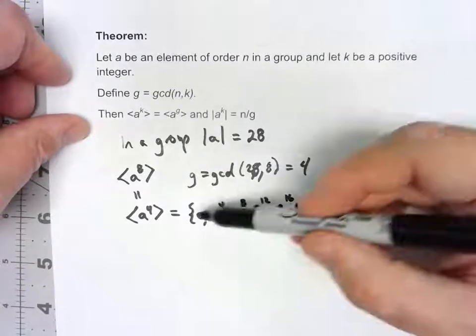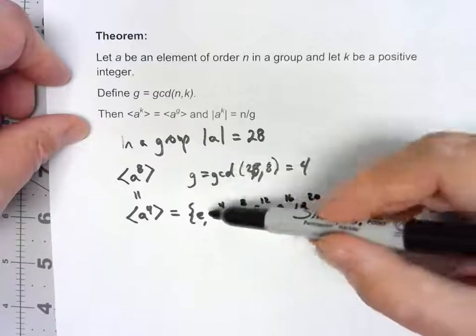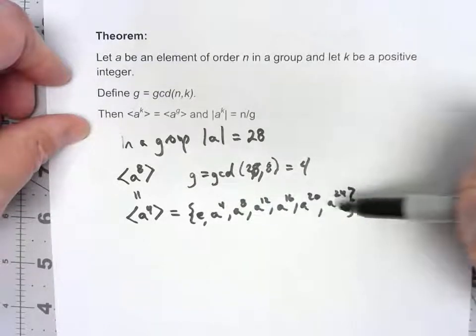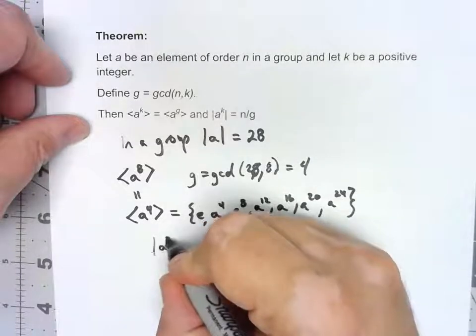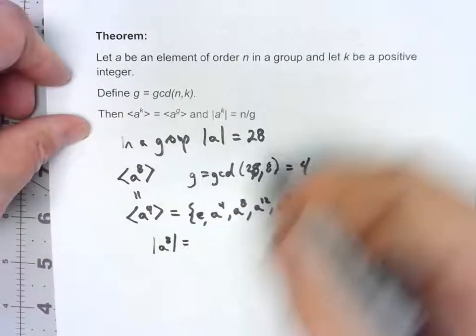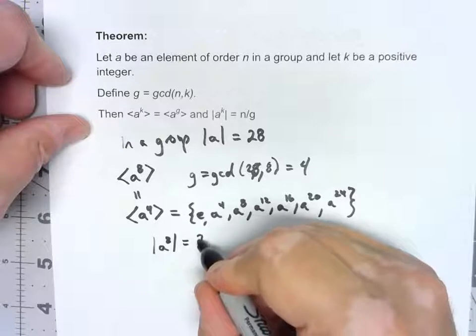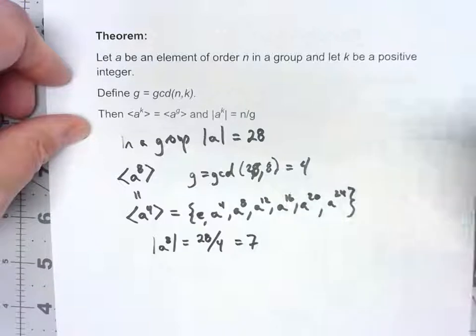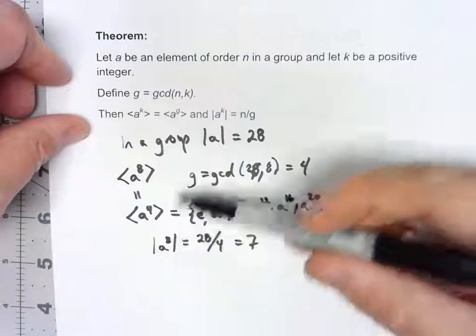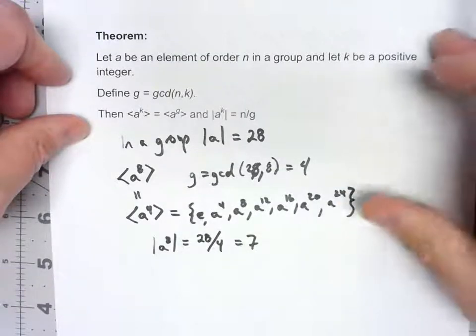Further, notice how many elements there are in that group: 1, 2, 3, 4, 5, 6, 7. The order of a^8 is the order of a, 28, over that GCD, 4, which equals 7. The order of a^8 was 7, just like we saw there.